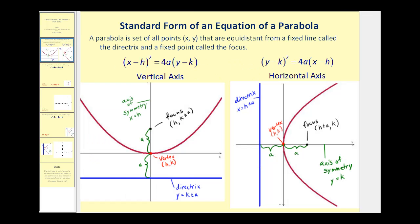Let's do a quick review from the last video. If we have a parabola in standard form where the x part is being squared, we are going to have a vertical axis, where h, k will be the vertex and the value of a will tell us the distance from the vertex to the focus and also the distance from the vertex to the directrix. That will be enough information to find the coordinates of the focus and the equation of the directrix. The latus rectum, which is parallel to the directrix passing through the focus, will have length 4a, telling us how wide or narrow the parabola is.